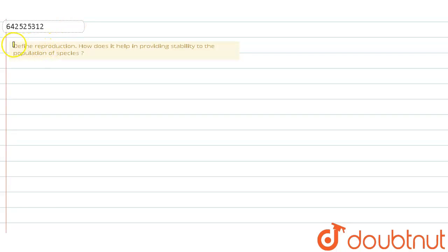And the question says define reproduction. So in this question we have to define what is the meaning of reproduction and we also have to state how does it help in providing stability to the population of species.